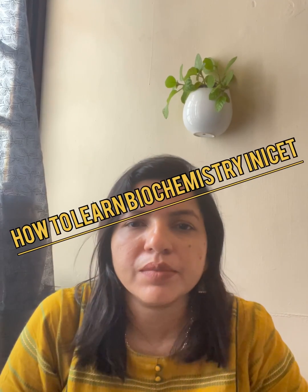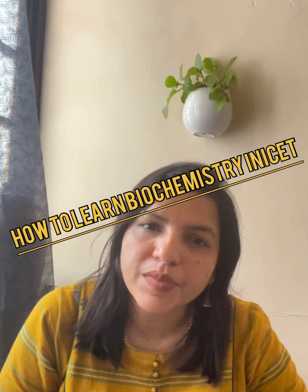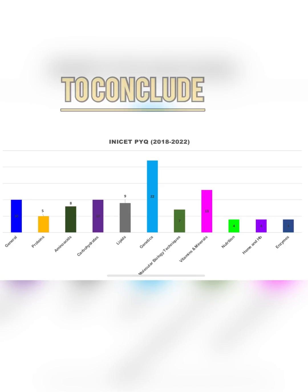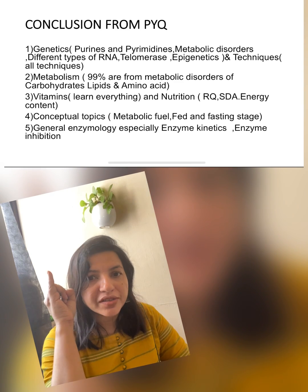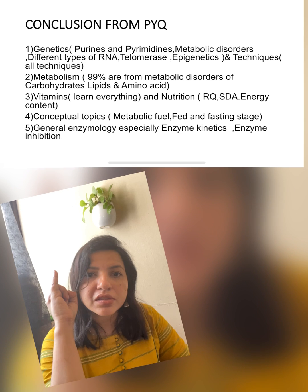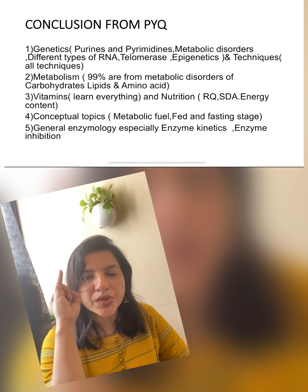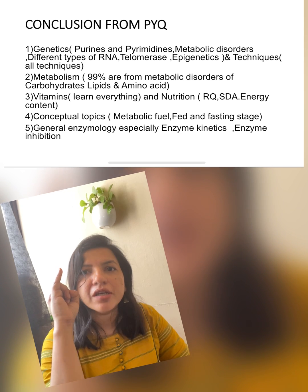This is about how to learn biochemistry smartly for INI-CET. First, genetics — especially the purines and the pyrimidines and the disorders associated with purines and pyrimidines.